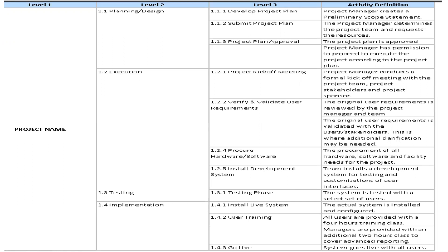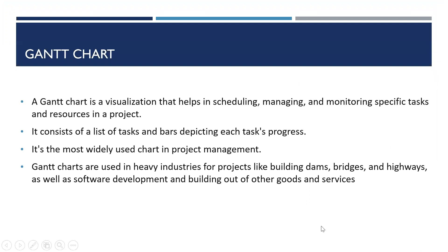Levels one, two, and three are identified during the formulation of the WBS. Level three, or the work package, is broken down into smaller activities. Now that we have developed the WBS and activity plan, we can create the Gantt chart. A Gantt chart is a commonly used graphical depiction of a project schedule — a type of bar chart showing the start and finish dates of project elements such as resources, planning, and dependencies.